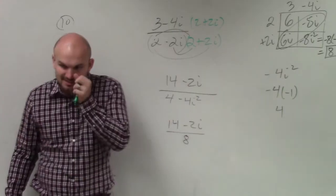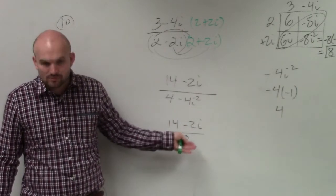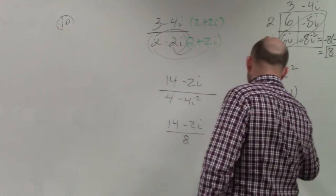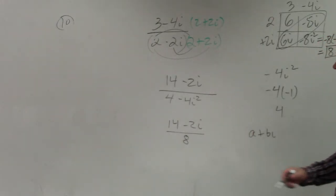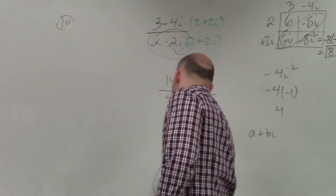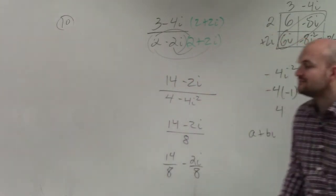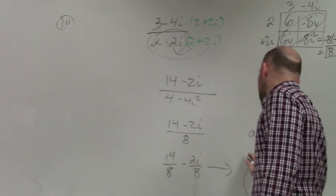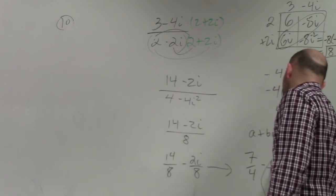And then, the last answer, guys, to make sure that when you have this, you always want to divide everything out. We always write complex numbers as a plus bi. All right? So what I'm going to do is I'm going to divide each of these terms by 8. So I have 14 over 8 minus 2i over 8. Then I divide the top and bottom by 2. So my final answer is going to be 7 fourths minus i over 4.